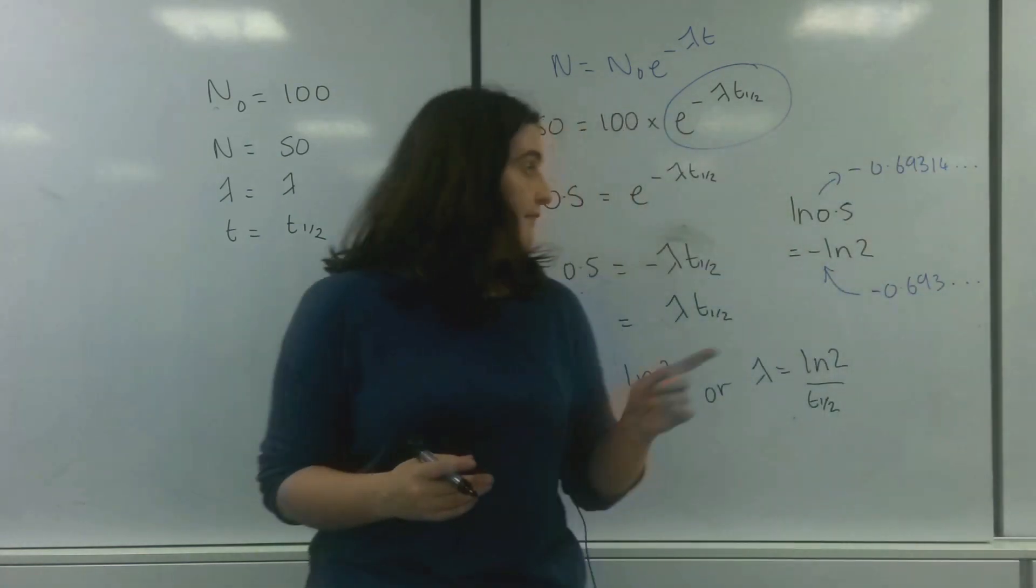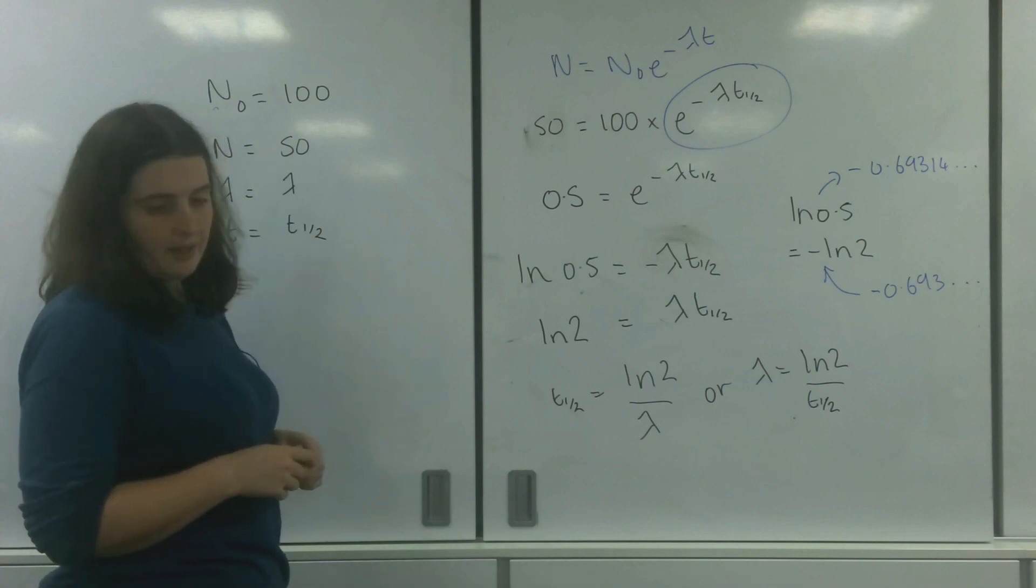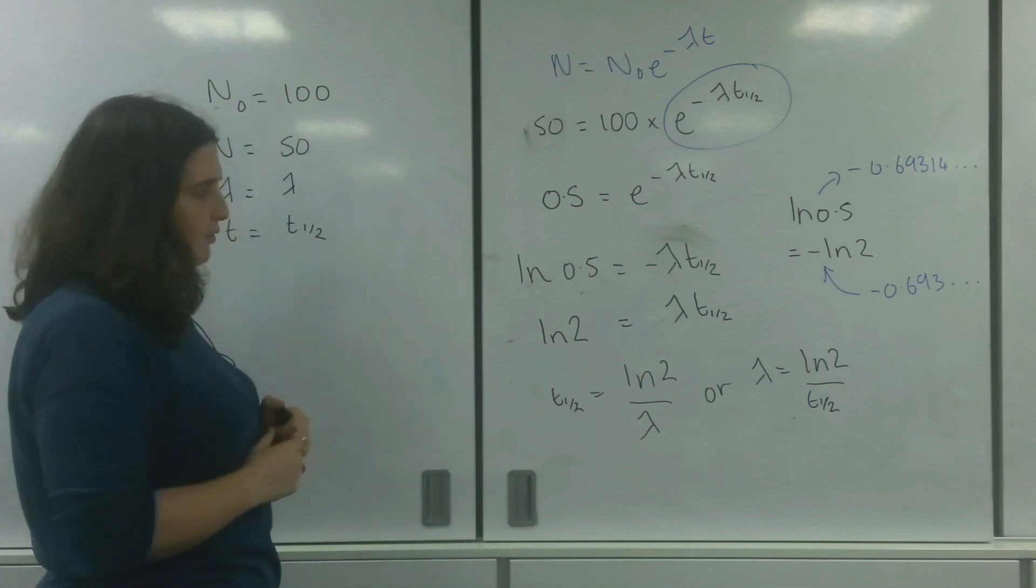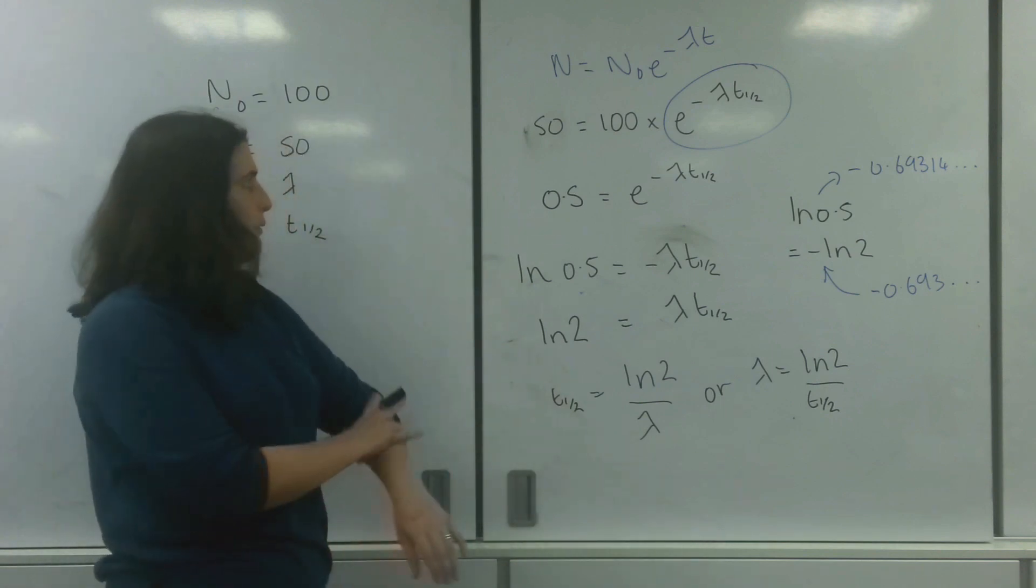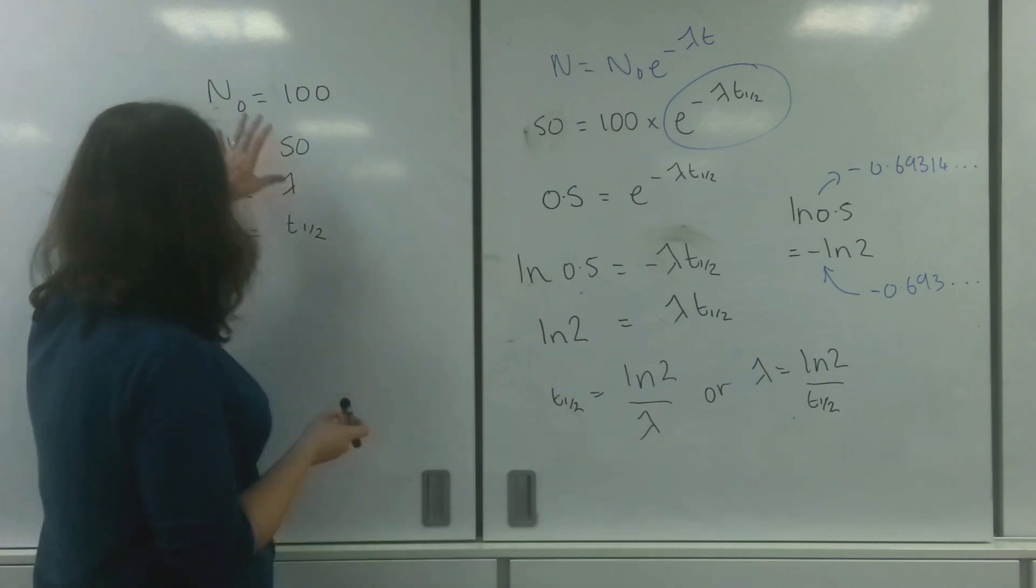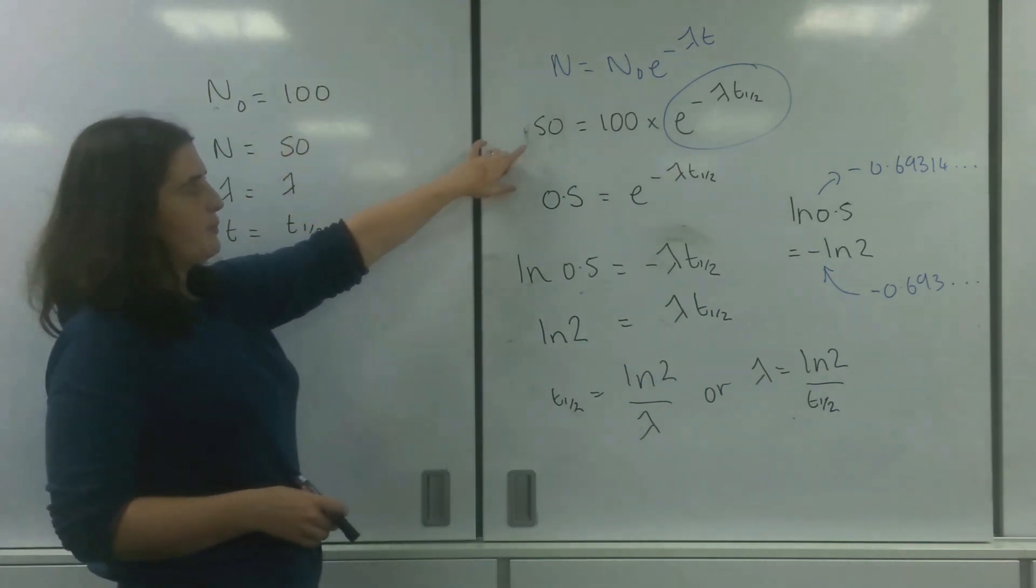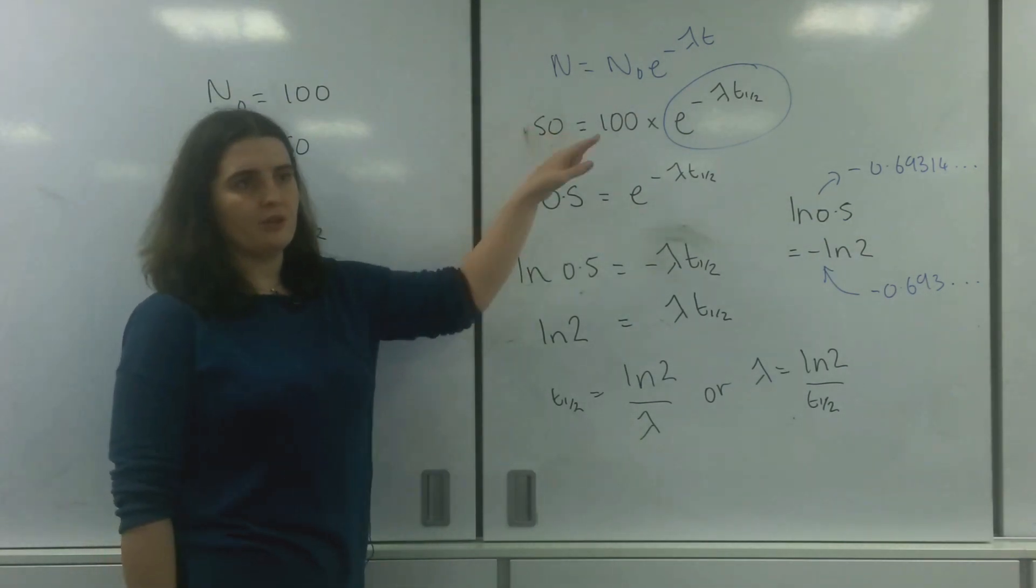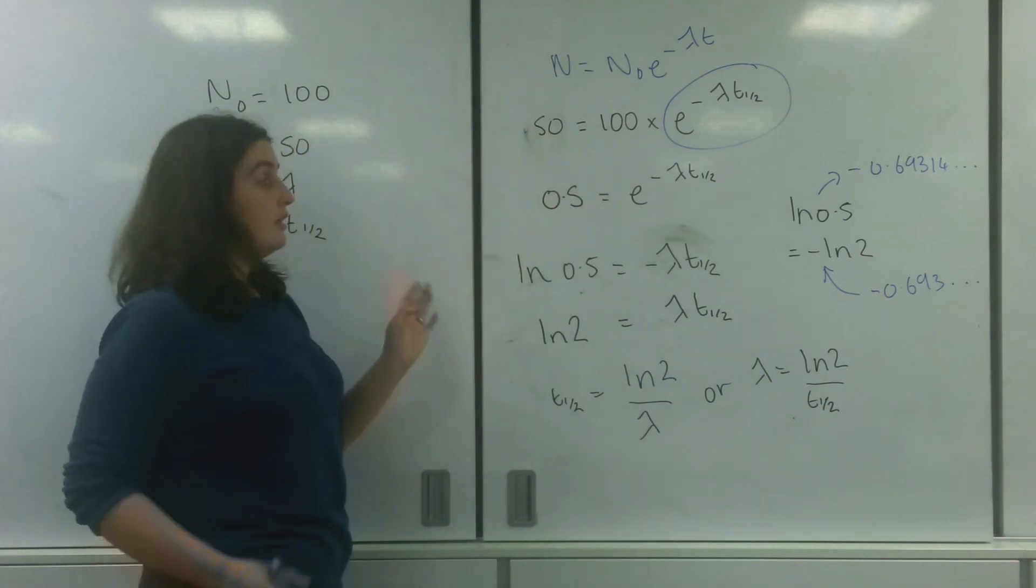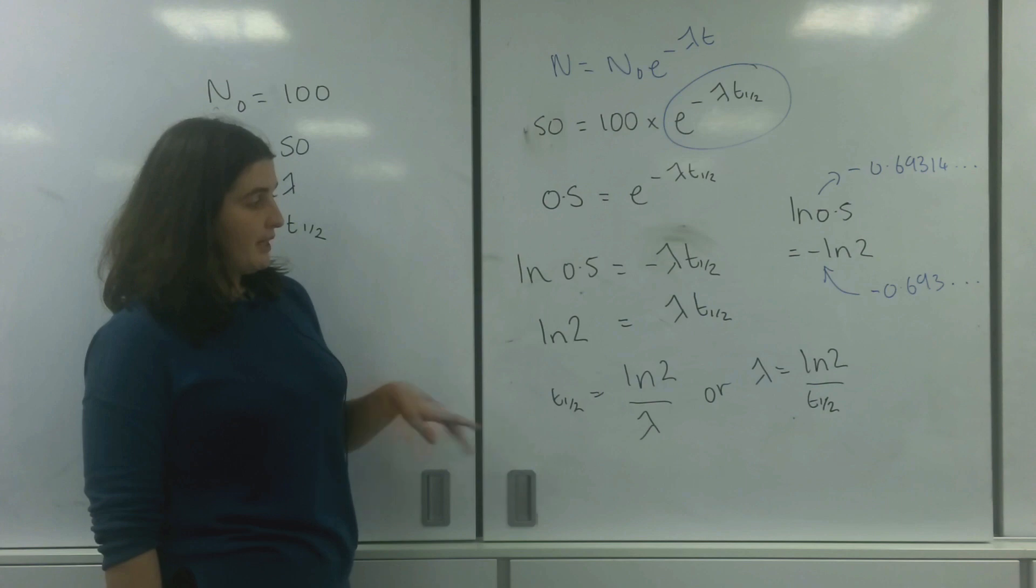And these formulae are found on your data sheet underneath your radioactive decay formula here. But it's really important - you don't really need to know where it comes from. However, it's very easy to work out. And I could have used any numbers I wanted, I could have done 1,500. Basically, the whole idea is that the ratio between here and here is 0.5. So you could have had 5 and 10, you could have had 4 and 2, etc. The ratio between them must be a half, so 0.5.